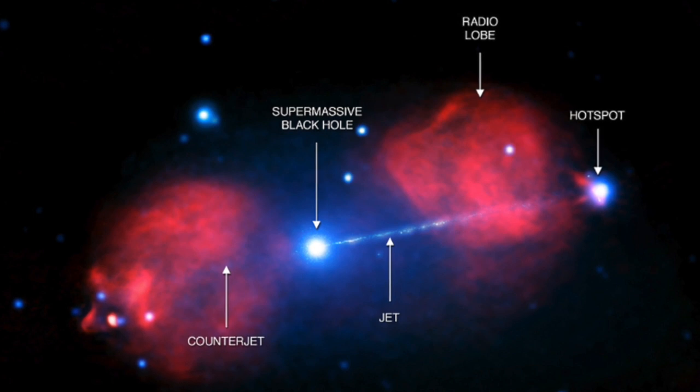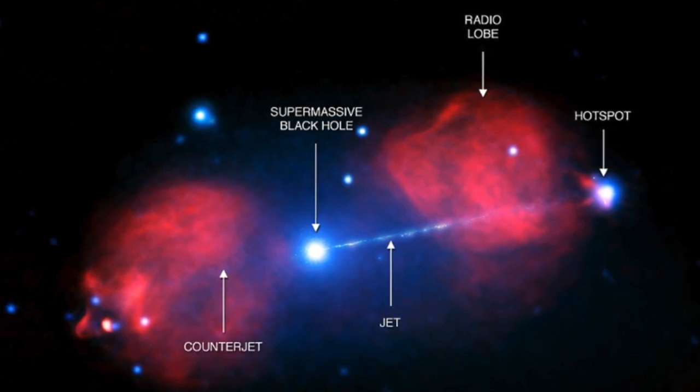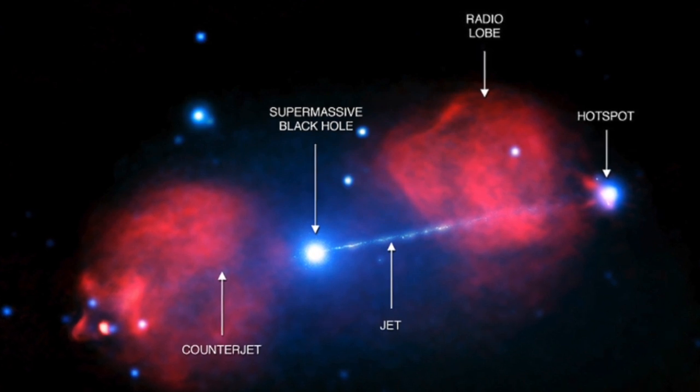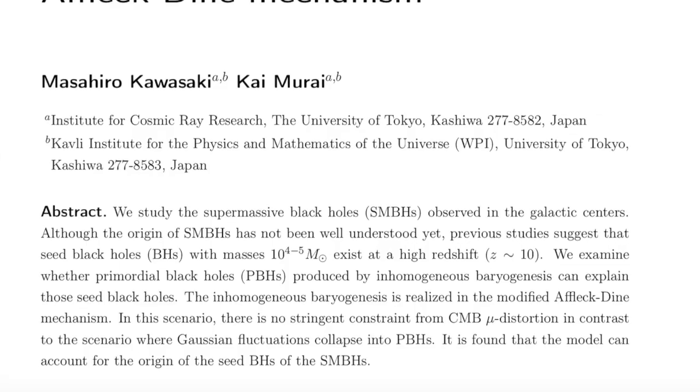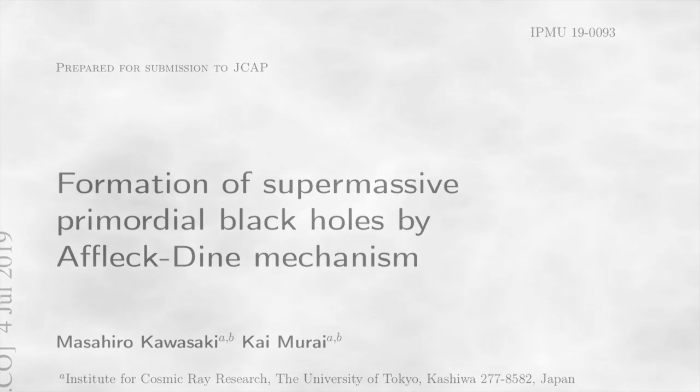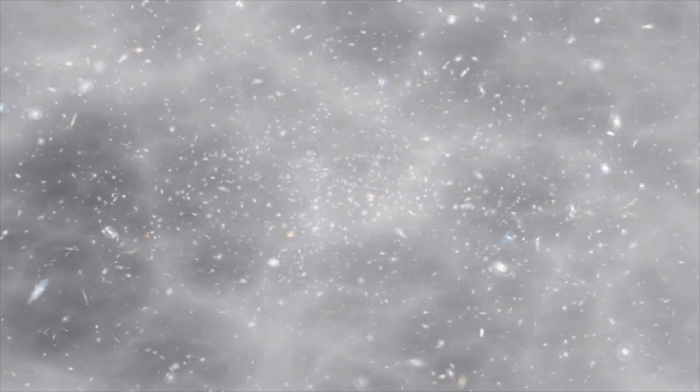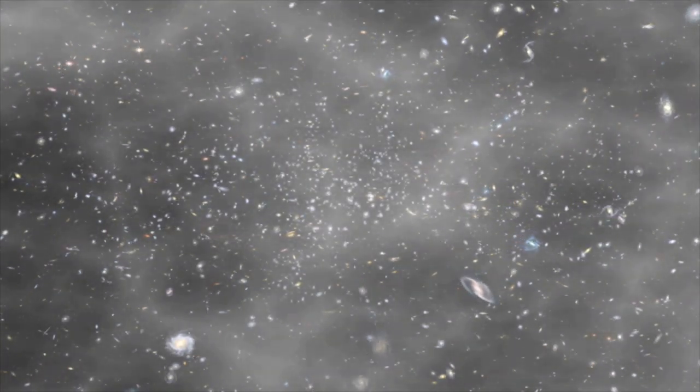So how is this happening? A simple solution is that supermassive black holes might have actually come into existence before almost anything else. A new study from the University of Tokyo supports this idea. The authors, Mashihiro Kawasaki and Kai Mirai, examine if the conditions just after the Big Bang can explain the presence of very old supermassive black holes.